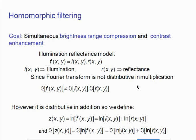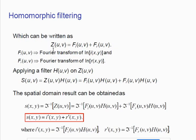Since the Fourier transform is not distributive over multiplication, we apply a natural log to convert the product into a sum: ln(i) + ln(r). We then apply the Fourier transform, giving Z(u,v) = F_i(u,v) + F_r(u,v), where F_i is the Fourier transform of ln(i) and F_r is the Fourier transform of ln(r). The homomorphic filter is then applied by multiplying with both components in the frequency domain.